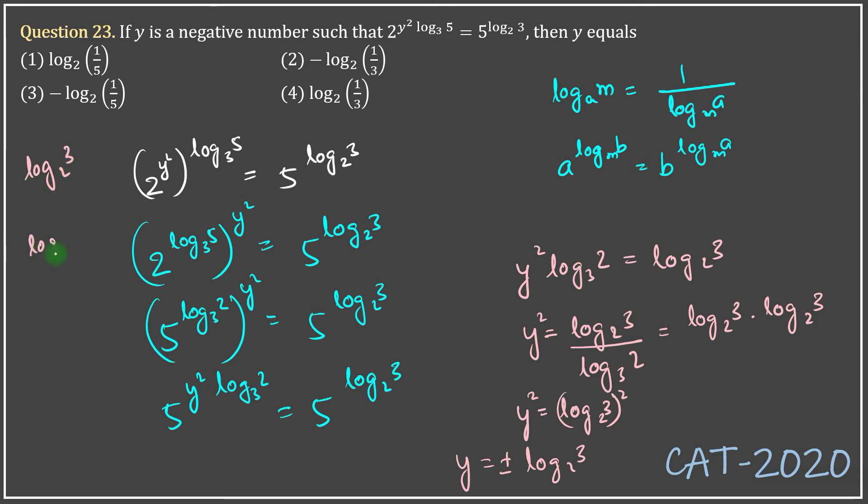As log 1 to the base 2 is equal to 0, logarithm of any number greater than 1 to the base 2 must be positive. Which means log 3 to the base 2 is positive. So, therefore, plus log 3 to the base 2 will be a positive number but y is a negative number. Hence, we will reject that value which means y should be equal to minus log 3 to the base 2.